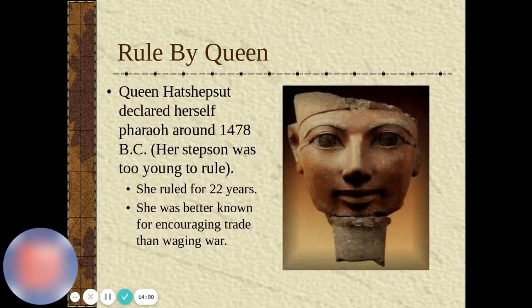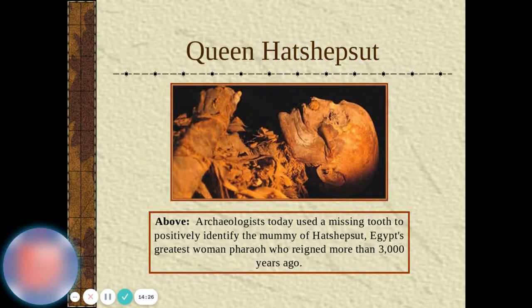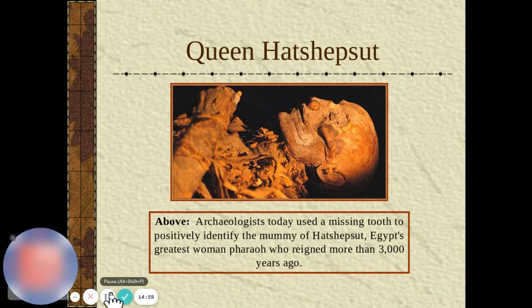Queen Hatshepsut declared herself pharaoh around 1,478 BC. Her stepson was too young to rule, so she ruled for 22 years. She is better known for encouraging trade than waging war. Here is a mummy — that's her — she was the greatest woman pharaoh who reigned more than 3,000 years ago. It's amazing how skilled the Egyptians were at preserving their dead.